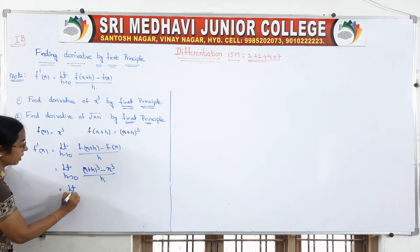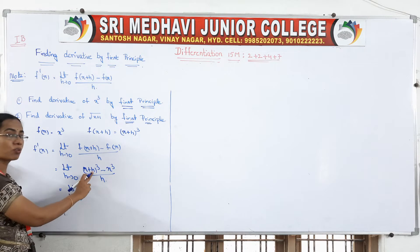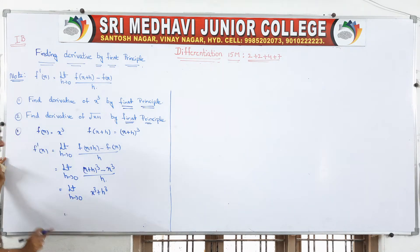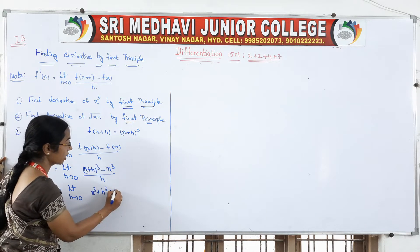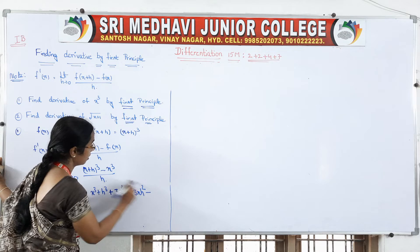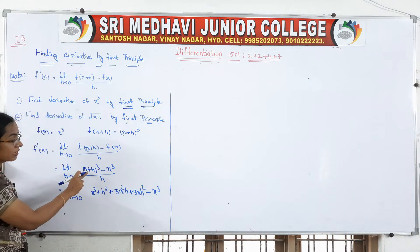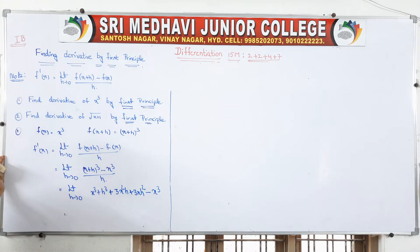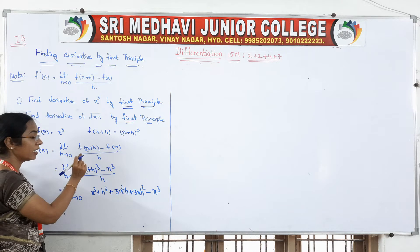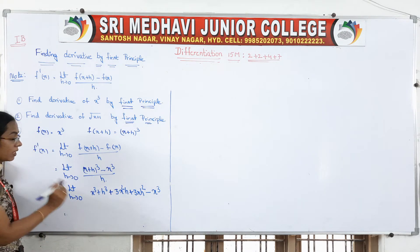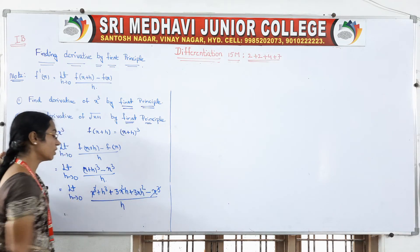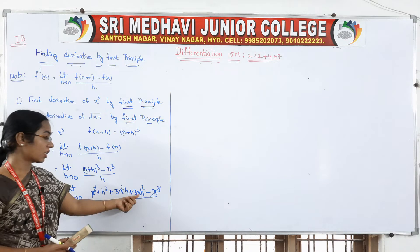Now we expand using the (a+b)³ formula, where a = x and b = h. The formula gives a³ + b³ + 3a²b + 3ab². So it becomes: x³ + h³ + 3x²h + 3xh² minus x³, all divided by h. The +x³ and −x³ get cancelled.